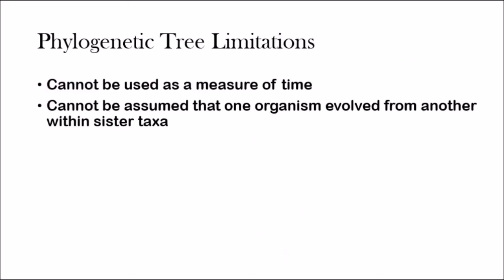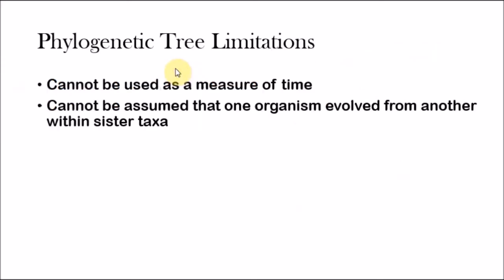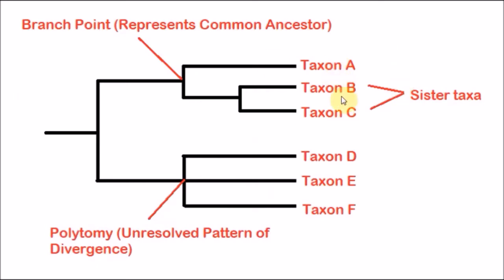The limitations of phylogenetic trees: first, they cannot be used as a measure of time. You can't assume that one common ancestor formed at the same time as another just because they're aligned on the tree. You can only assume the evolutionary history, not when each event happened. Second, you cannot assume that one organism evolved from another within a sister taxa. You can't assume taxon C evolved from taxon B or vice versa — you can only assume they share a direct common ancestor.